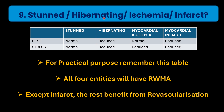To summarize the difference between stunned, hibernating, ischemia, and infarct: all four entities have regional wall motion abnormality. Myocardial infarct is the only one where LGE images show scar tissue or enhancement. In stunned myocardium, at rest and stress there won't be perfusion defects because reperfusion has already occurred. In hibernating, there will be fixed reduced perfusion seen in both rest and stress.